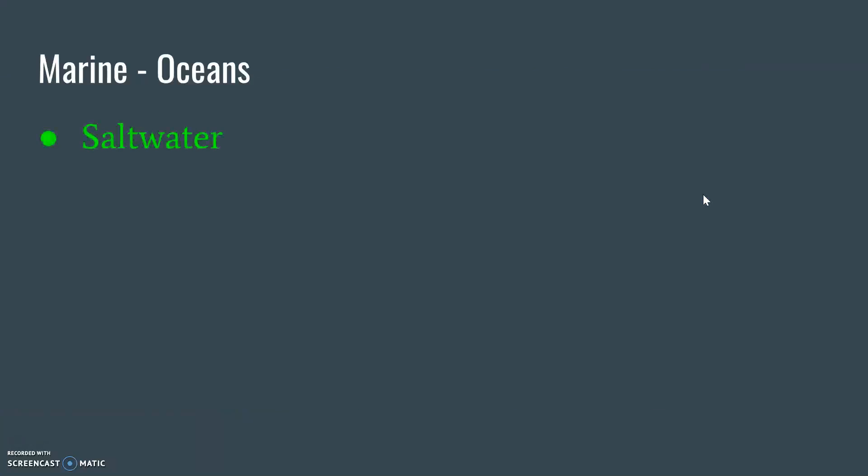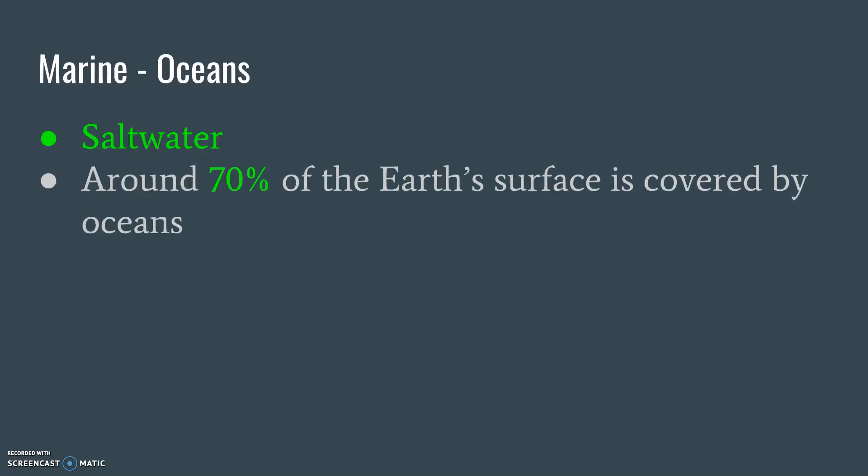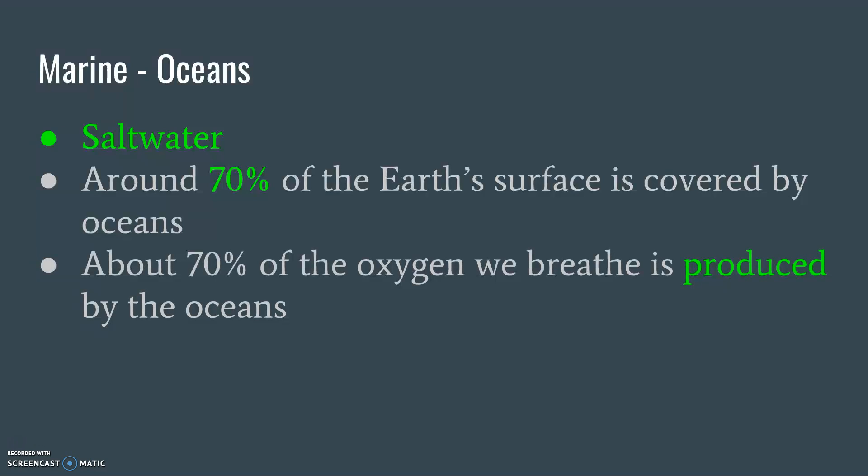Saltwater is going to be just the oceans. Around 70% of the Earth's surface is covered by oceans — there are like five or six oceans, and they're all saltwater. Also, 70% of the oxygen we breathe is produced by oceans, because algae can still grow in the ocean.